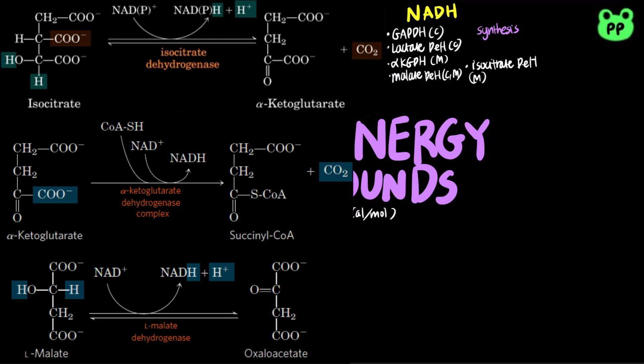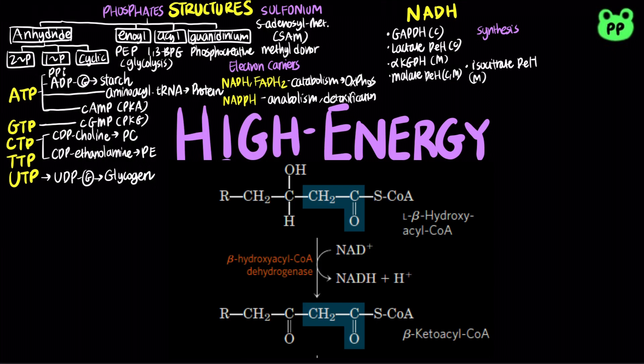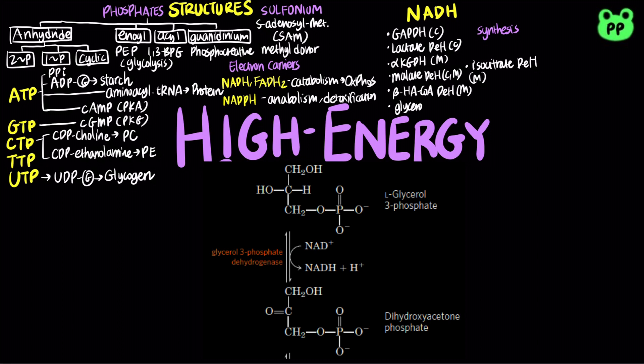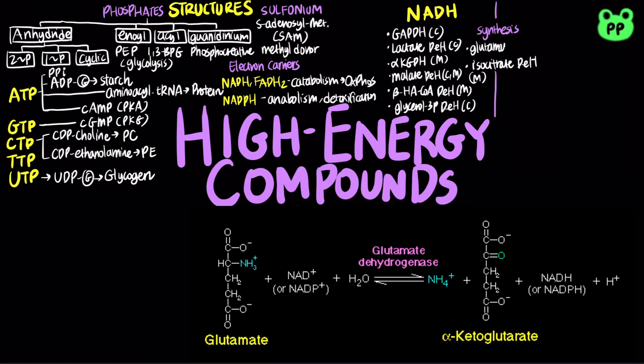Malate dehydrogenase is also found in cytosol. Beta-hydroxyacyl-CoA dehydrogenase from beta-oxidation of fatty acid is found in mitochondria, and glycerol-3-phosphate dehydrogenase from triacylglycerol metabolism occurs in the cytosol. Glutamate dehydrogenase, which participates in nitrogen metabolism, is found in mitochondria and can synthesize either NADH or NADPH.